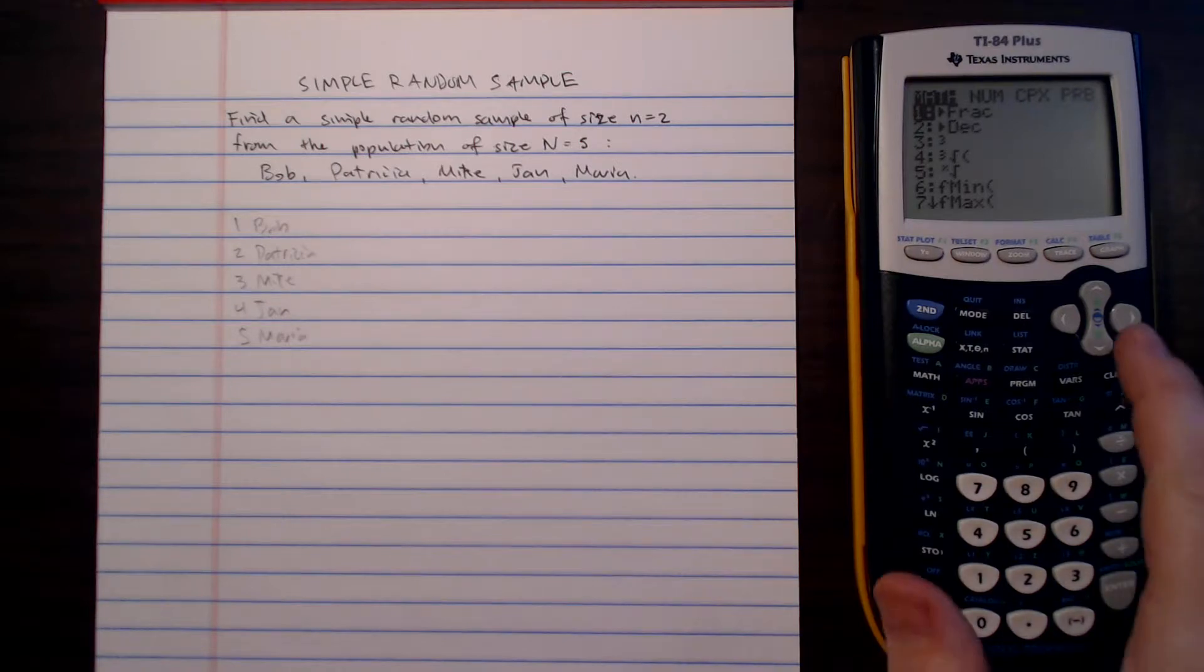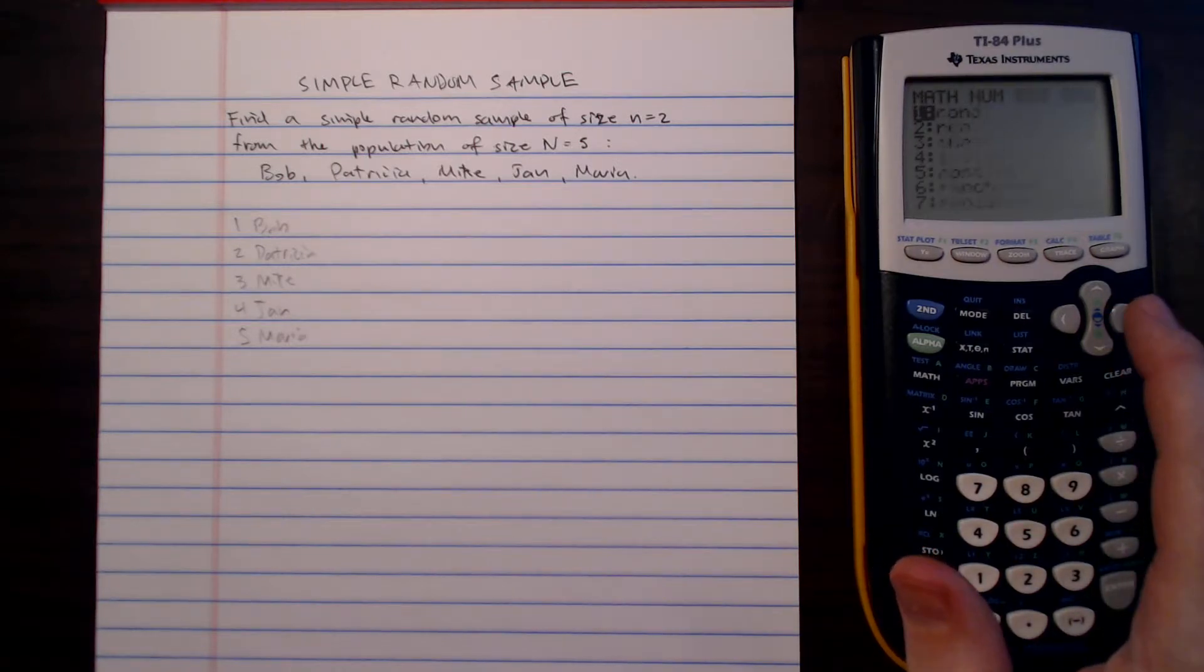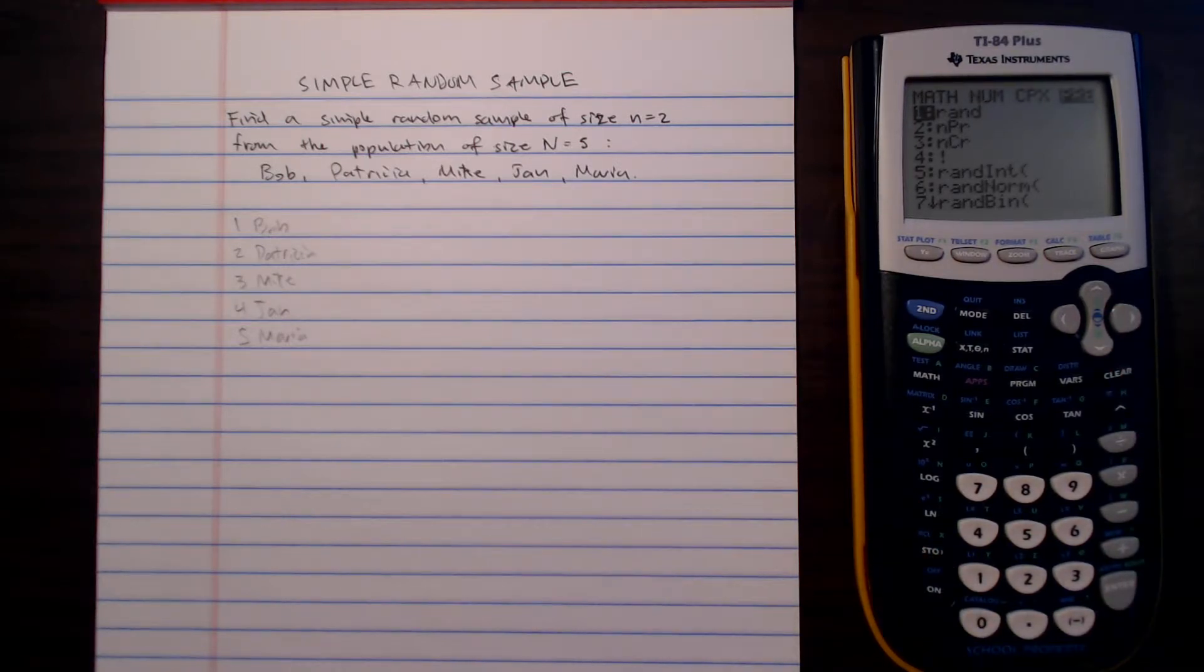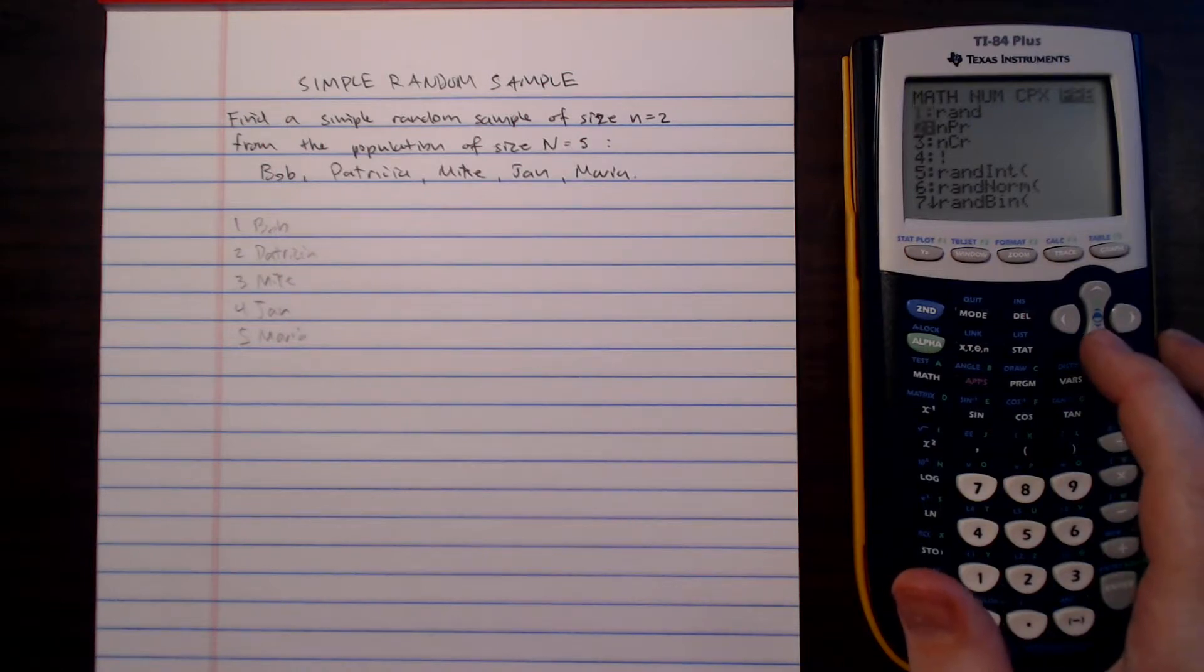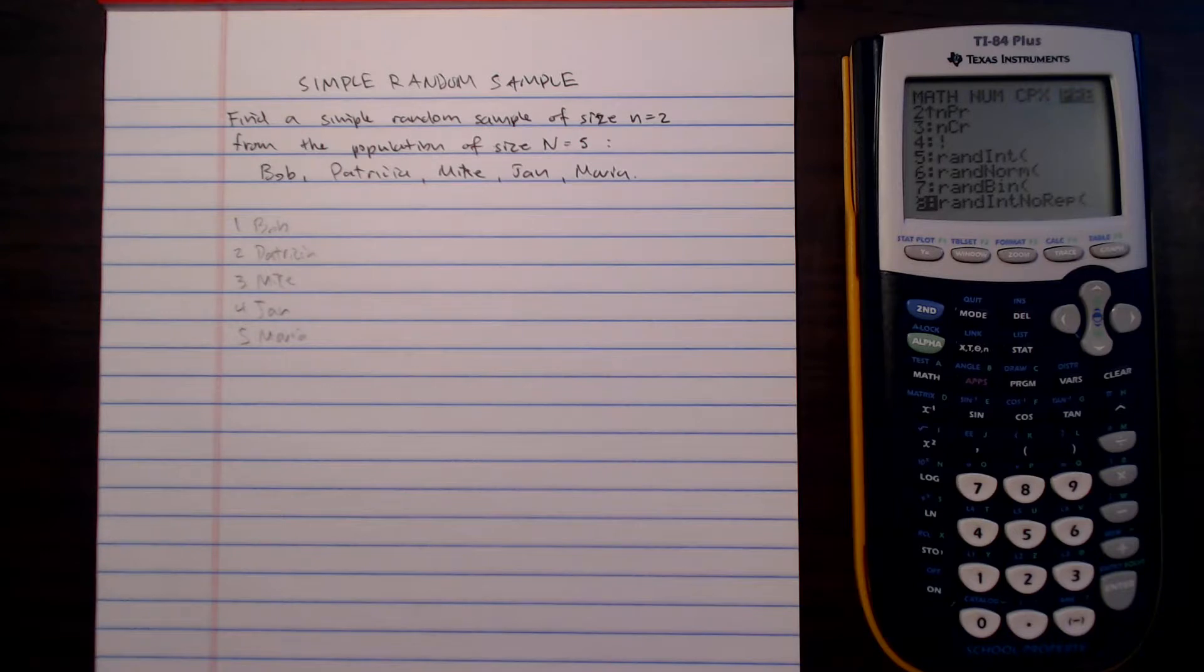This will give us several options. We're going to scroll over to probability, and once we're here we can scroll down to the eighth option, or you can hit eight, and this will give us an option of random integers with no repetition. So we'll hit enter to select that.